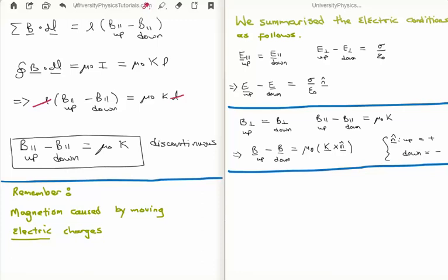This is none other than Ampere's law. Ampere's law says that the closed line integral of B dot dl is mu zero times i, i being the current. We can change the current and instead use the surface current density multiplied by the length. So mu zero times k times l equals l times the difference between the tangential components of the magnetic field. This implies that the parallel or tangential component of the magnetic field is discontinuous either side of your medium by an amount mu zero times the surface current density. So the perpendicular component of the magnetic field is continuous, while the parallel component is in fact discontinuous.